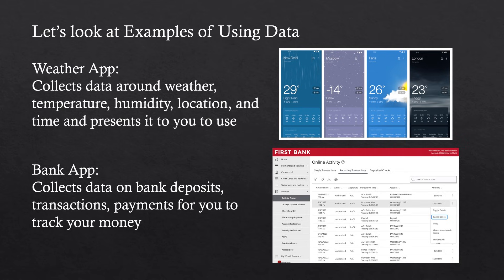They typically will process this data as well as forecast — meaning they predict what they think is going to happen in the next hour, two hours, a day, or several days ahead. Another example would be a bank app. I go on my phone all the time to check my banking statements to make sure I didn't spend too much money. Everything in your banking app is data. You can see where you spent your money, the amount, the date, and the time — these are all different data points the bank has collected. Banks collect hundreds, if not thousands of data points, like deposits, transactions, and payments, so they can put it in your dashboard so you can track your money.